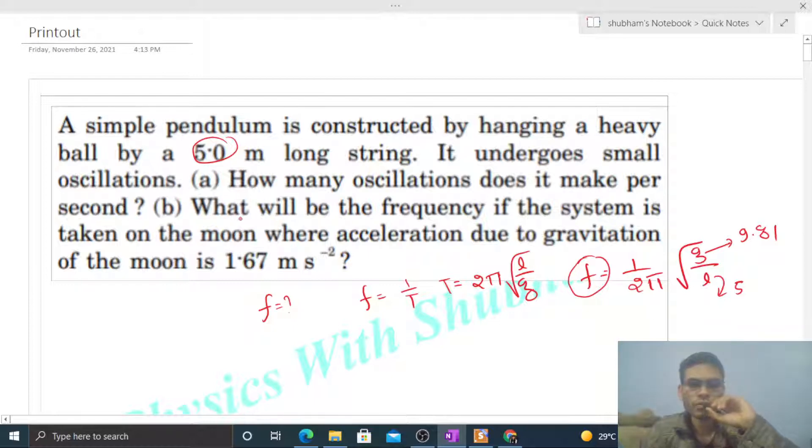What will be the frequency if the system is taken on the moon where acceleration due to gravitation is 1.67 m/s²? You have to use the same frequency formula 1/(2π)√(g/l), but g will be 1.67 m/s².